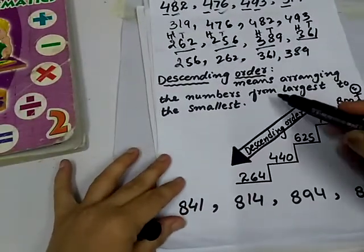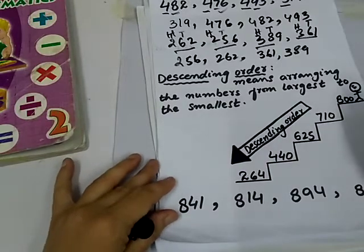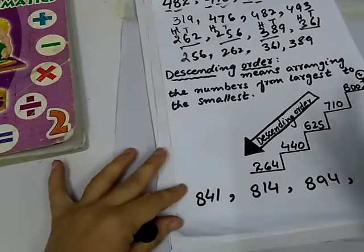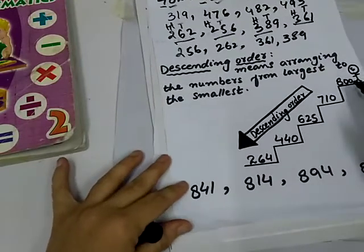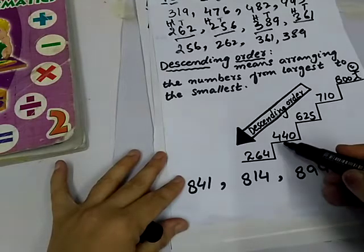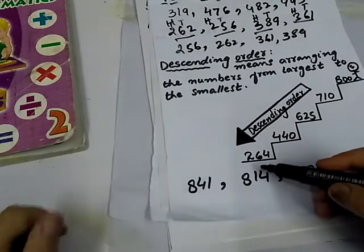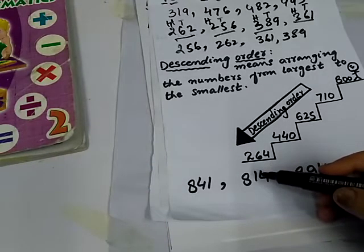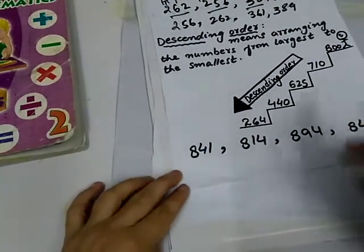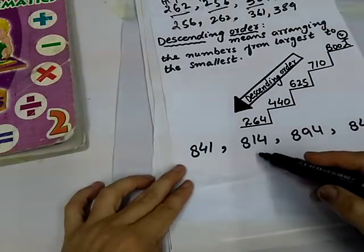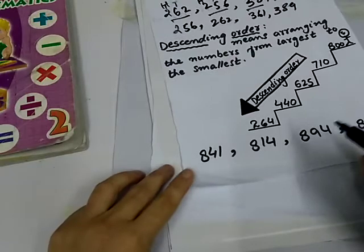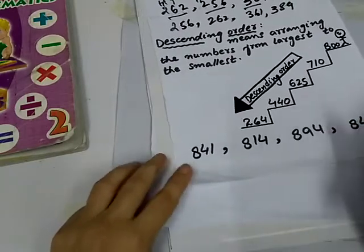Descending order means arranging the numbers from largest to the smallest. Big to small. Big to small. 800, 710, 625, 440, 264. Let us arrange these numbers. The number is 841, 840, 894, 849. In the descending order, we write first number is the greatest number.